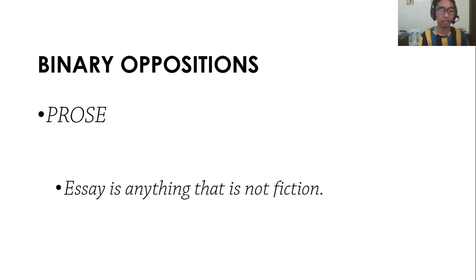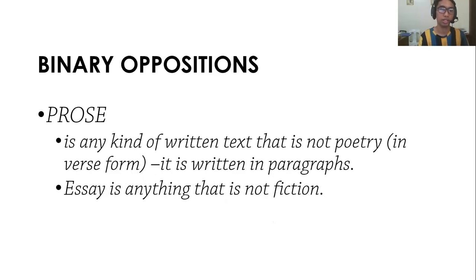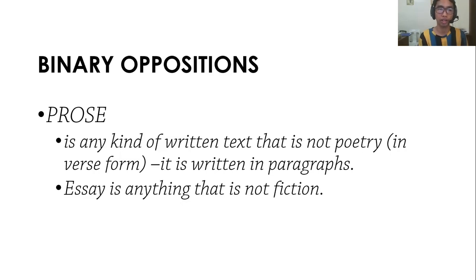When we say binary options, there are two options — and that's what we call prose. The first of the binary oppositions: prose is any kind of written text that is not poetry in verse form; it is written in paragraphs. Normally for prose, they are not written in poetry or in verse form, because poetry is in verses. Rather, prose is written in paragraphs.